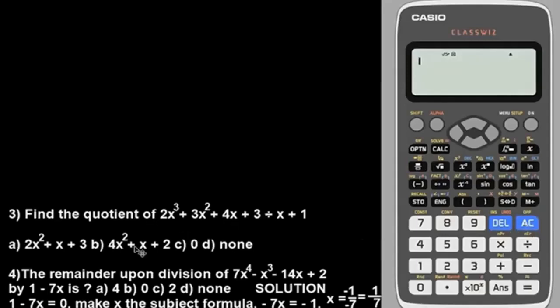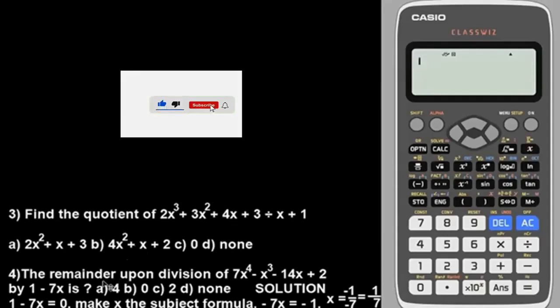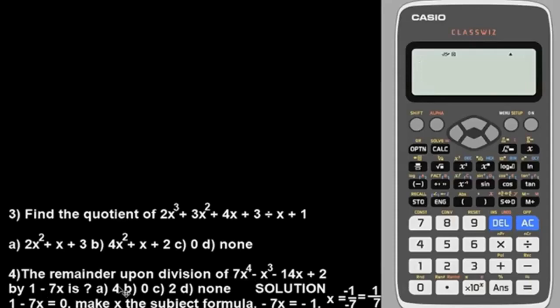Lastly, let's look at the remainder upon division. Question 4 says: remainder upon division of this polynomial by 1 - 7x is what. If we closely look, I'll outline some things here for you. Now we have this kind of remainder question. The first thing to do is take the value dividing the polynomial, like here 1 - 7x, and equate it to zero.